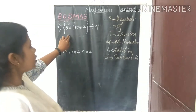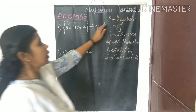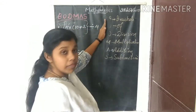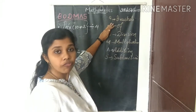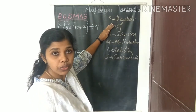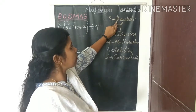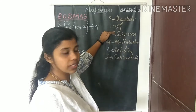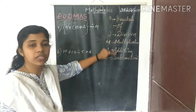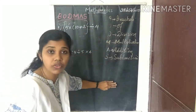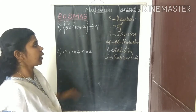Let's recap the BODMAS rule: first do operations in the bracket, next the 'of' function, next division, then multiplication, then addition, and last subtraction.